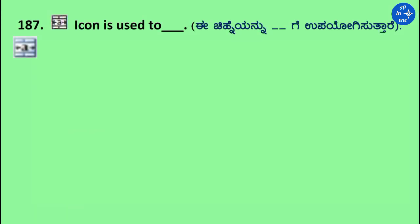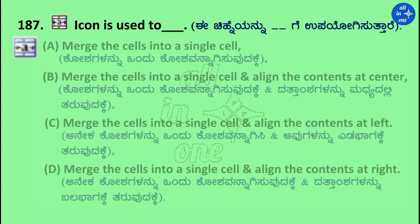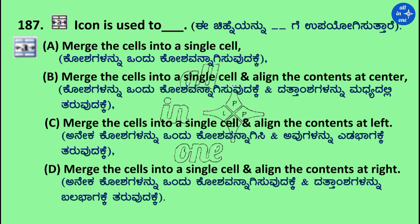Question: This icon is used to dash. Options: Merge the cells into a single cell; Merge the cells into a single cell and align contents at center; Merge and align contents at left; Merge and align contents at right. Right answer is: Merge the cells into a single cell and align the contents at center.